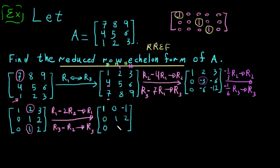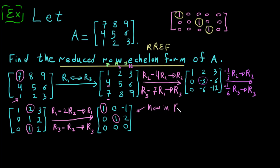The final matrix is [1 0 -1 / 0 1 2 / 0 0 0]. Now we verify RREF: the leading one in row one, go below then go right until you find the next leading one, go below then find the next. The leading ones go strictly right and down. This matrix is now in RREF.